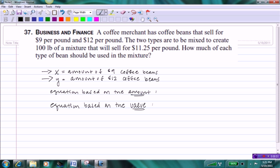My first equation is going to be based on the amount of coffee beans. Notice that in the problem we're told that the two types of coffee beans are going to be mixed together to create a mixture equaling 100 pounds. And so if I take the amount of $9 coffee beans and add the amount of $12 coffee beans, that will equal 100 pounds. My first equation then is simply X plus Y equals 100.